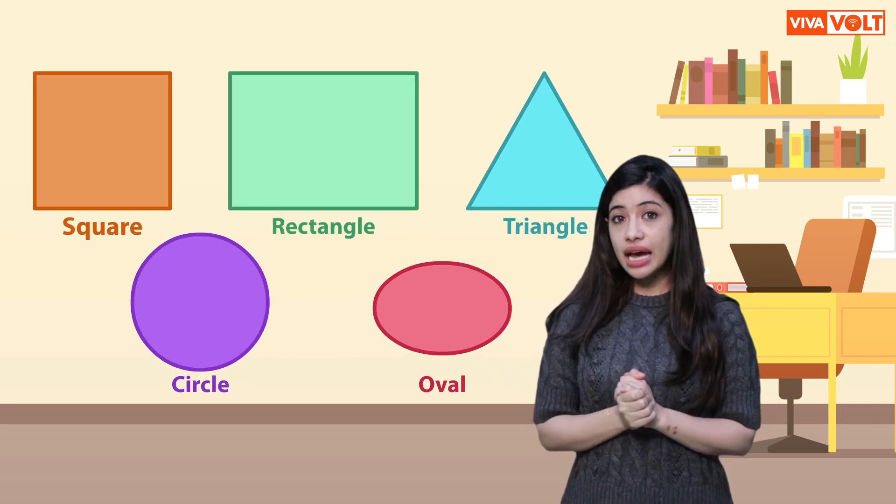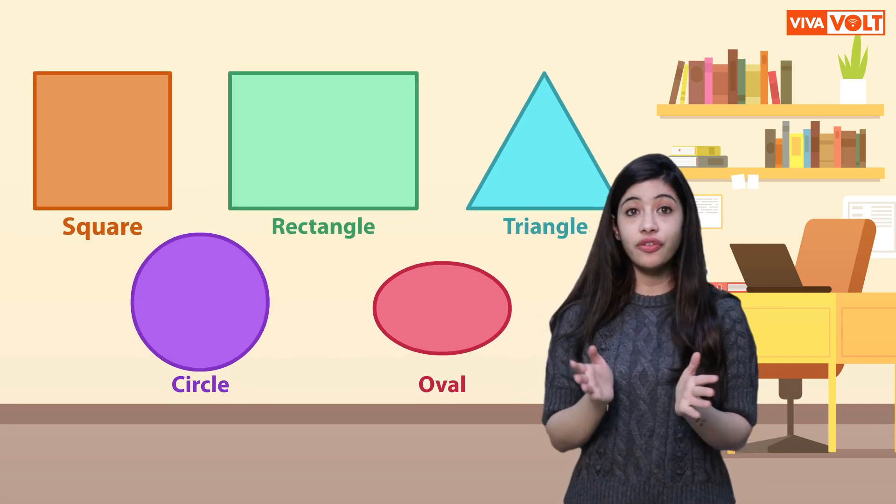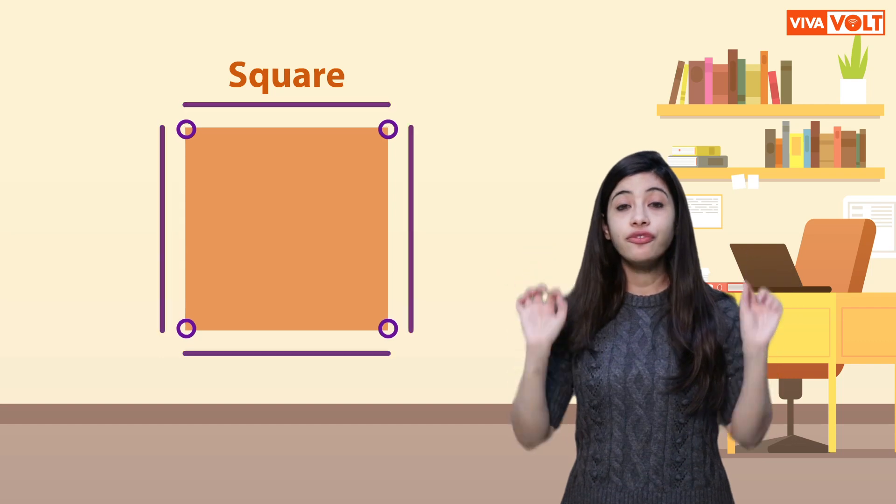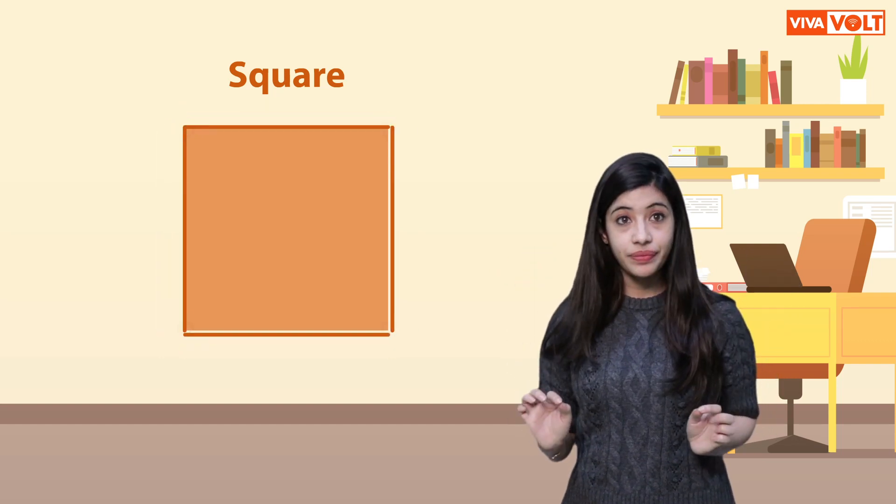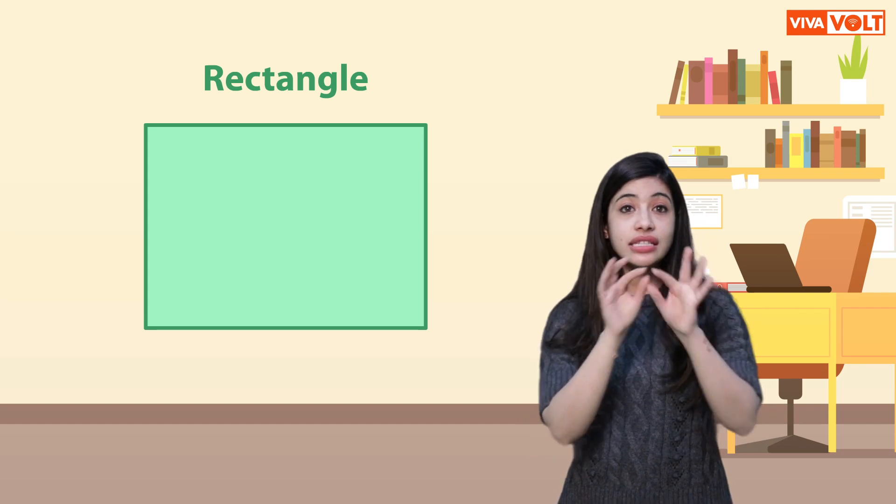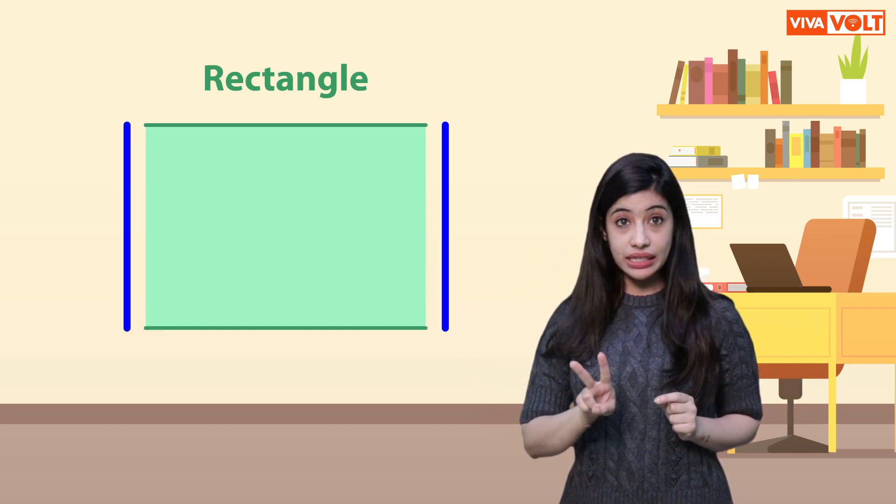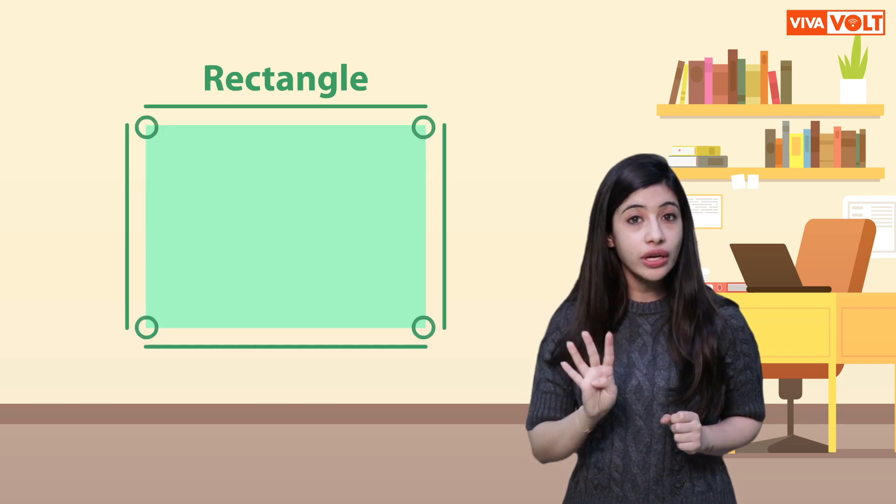Let's learn and understand how these shapes differ from each other. Square. A square has 4 corners and 4 equal sides. Rectangle. A rectangle has 2 long equal sides and 2 short equal sides. It has 4 corners.